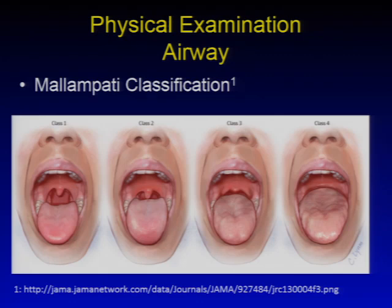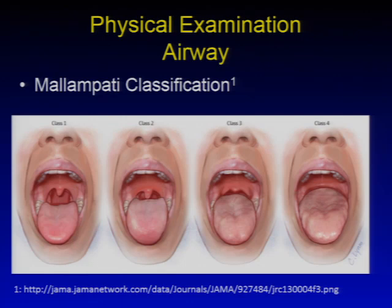Going deeper on the Mallampati classification, there are classes 1 through 4. Class 1: able to visualize the palate, the faucial pillars, and the entire uvula. Class 2: the palate, faucial pillars, and only the base of the uvula. Class 3: able to visualize the palate and only some of the faucial pillars. Class 4: only able to visualize the palate.